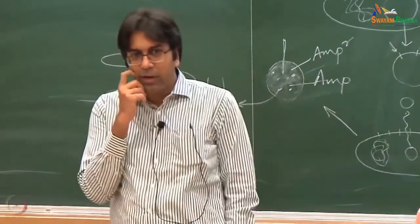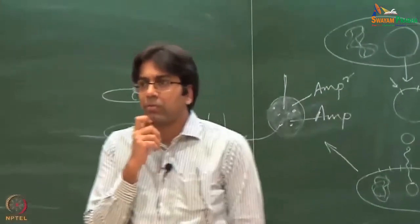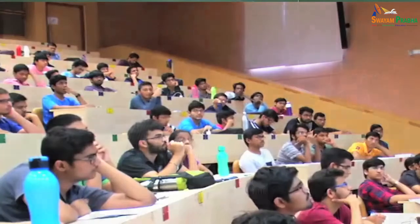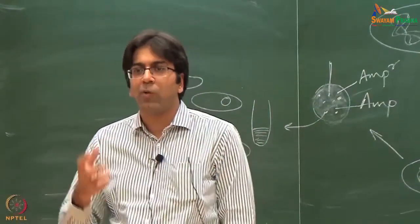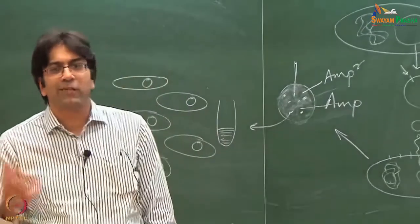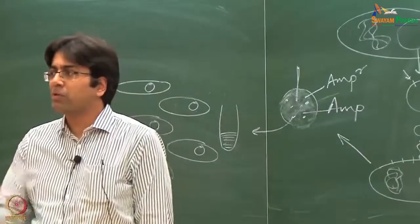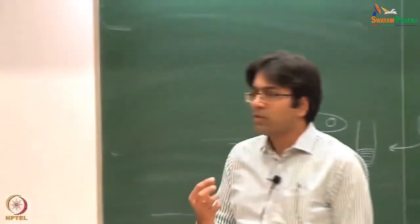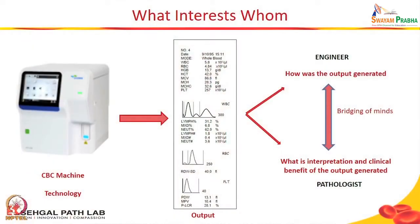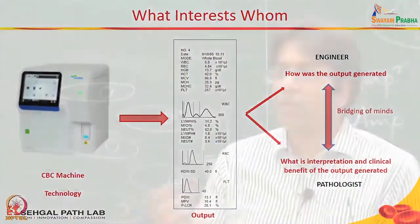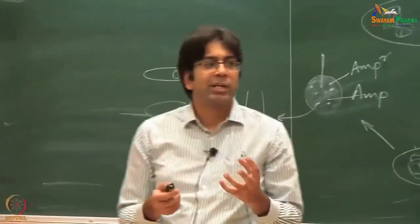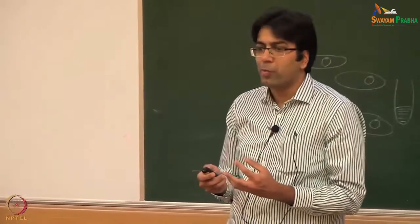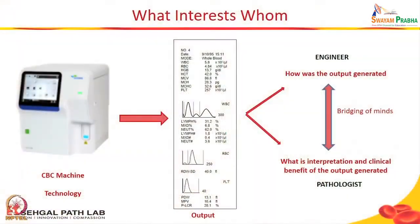The idea is: when an engineer is working in a lab or research setup trying to build something, the ultimate aim is to have it used — by clients, and if you are in the medical field, by doctors and patients. When a doctor looks at a technology product, he is more interested in the output and how he can use it for his patients. The interface an engineer looks at is between the machine and the output — how the output was generated. A doctor is typically looking at the interface from the output to the result. Let me show you an example of how this works.